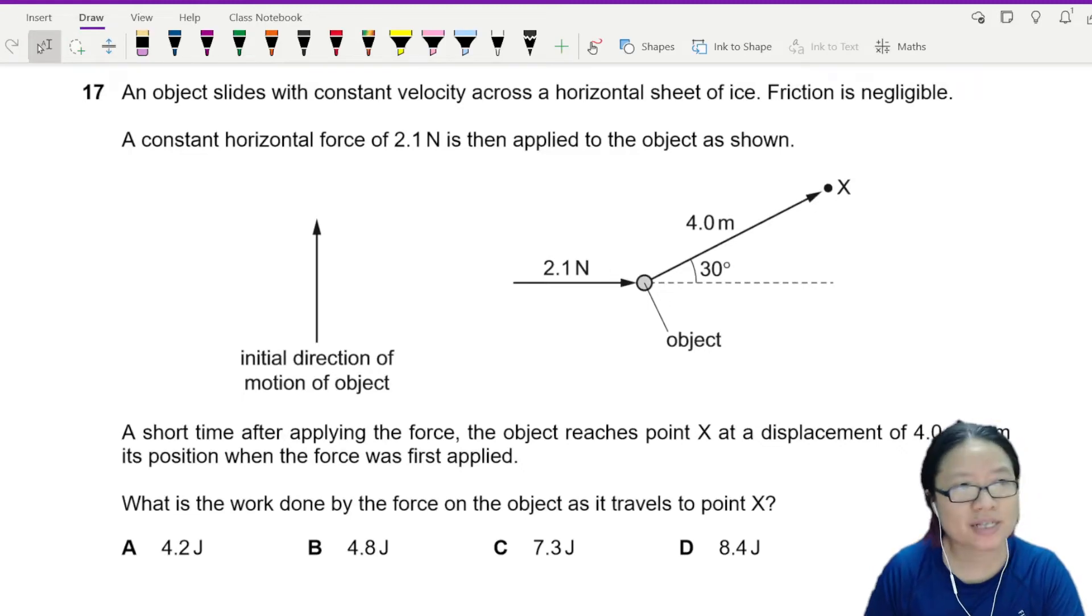An object slides with constant velocity across a horizontal sheet of ice. Friction is negligible.